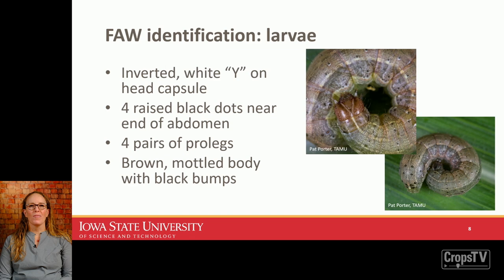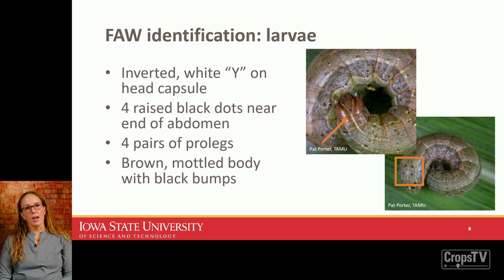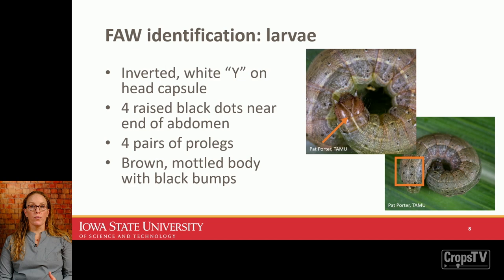When it comes to the larvae, they stand out compared to other armyworms and cutworms. They have an inverted white Y on the head capsule — actually a suture that all caterpillars have, but in fall armyworm it is very distinctly white. They also have four raised dots that look like a square at the end of the abdomen, black bumps, and a mottled brown body with stripes running from head to abdomen tip.